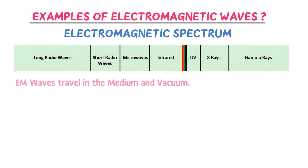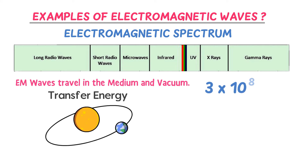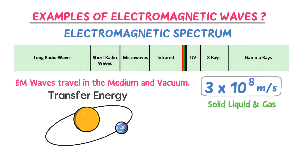Remember that electromagnetic waves travel both in a medium and in space or in a vacuum. This means they can transfer energy from one place to another through the vacuum — the sunlight we receive travels through space. The speed of all electromagnetic waves is approximately 3×10⁸ meters per second. However, this speed varies in different media such as solid, liquid, and gas due to refraction of waves.